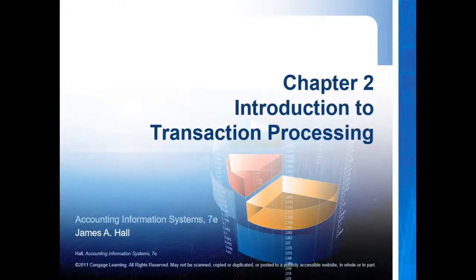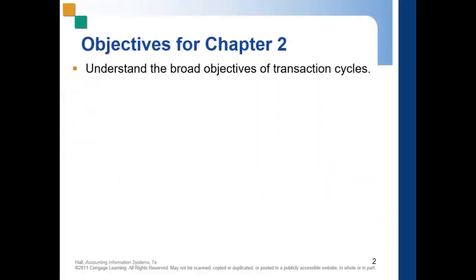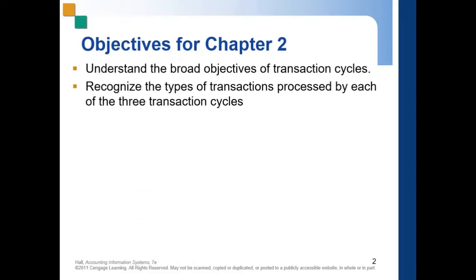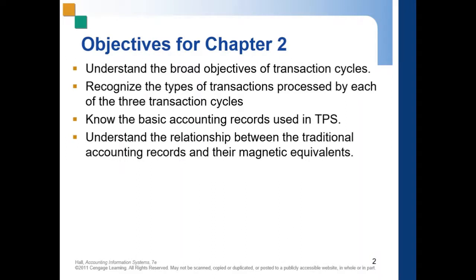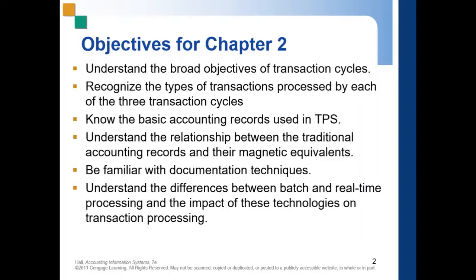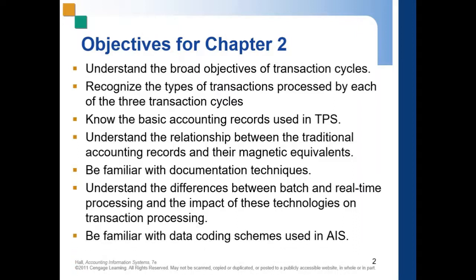Chapter 2: Introduction to Transaction Processing. The objectives for this chapter are: understand the broad objectives of transaction cycles; recognize the types of transactions processed by each of the three transaction cycles; know the basic accounting records used in TPS; understand the relationship between traditional accounting records and their magnetic equivalents; be familiar with documentation techniques; understand the differences between batch and real-time processing and their impact on transaction processing; and be familiar with data coding schemes used in AIS.